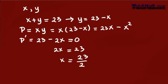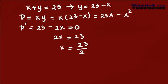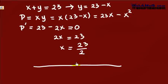Now we need to justify that this x indeed gives the maximum to the function p. We can use the fact that the derivative of p is 23 minus 2x. Here is the real line, and we put all the critical numbers on the line — so here, 23 over 2.